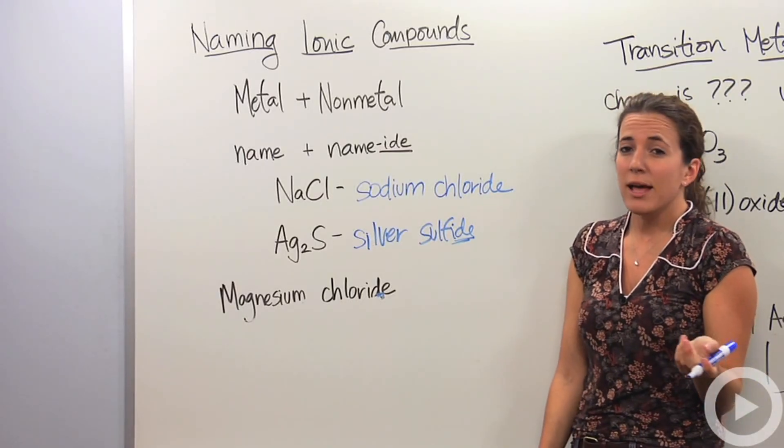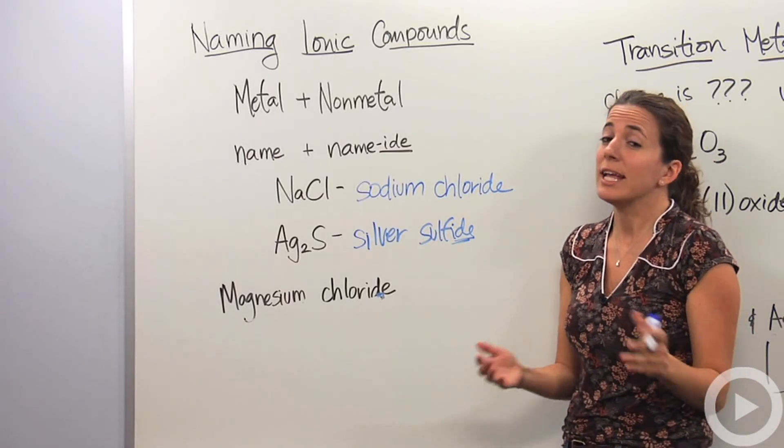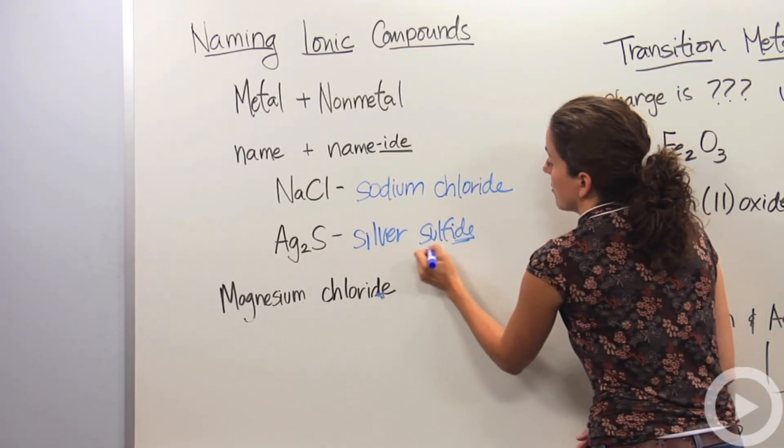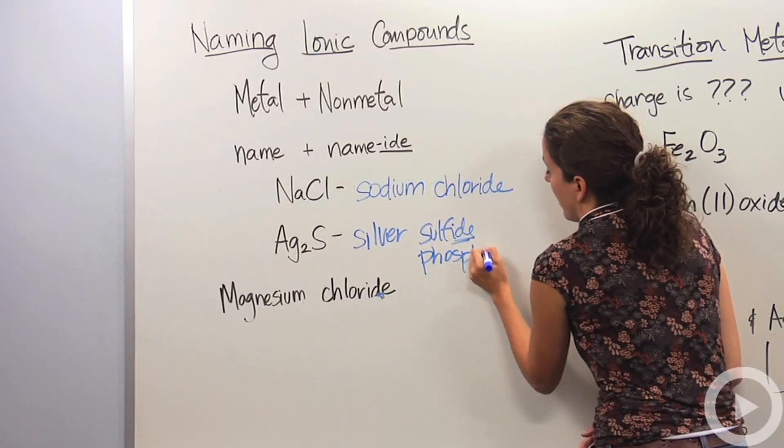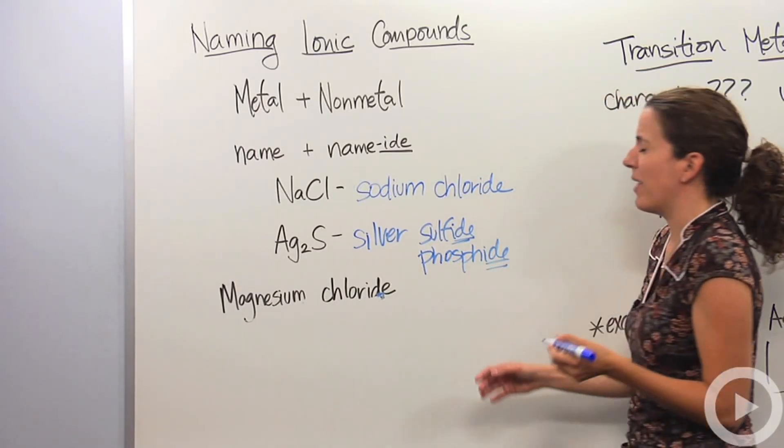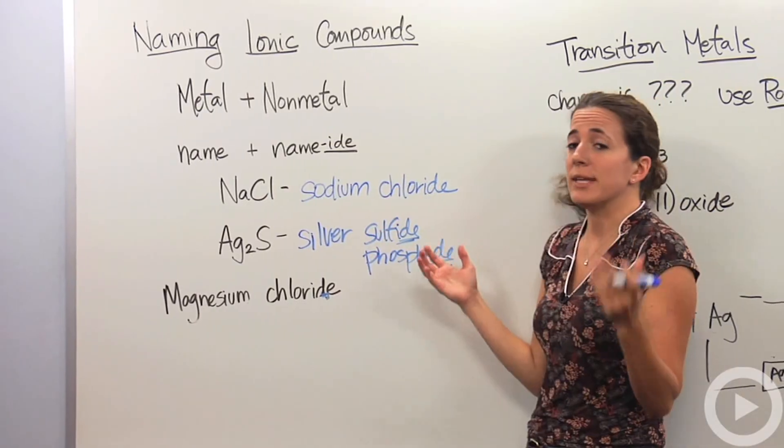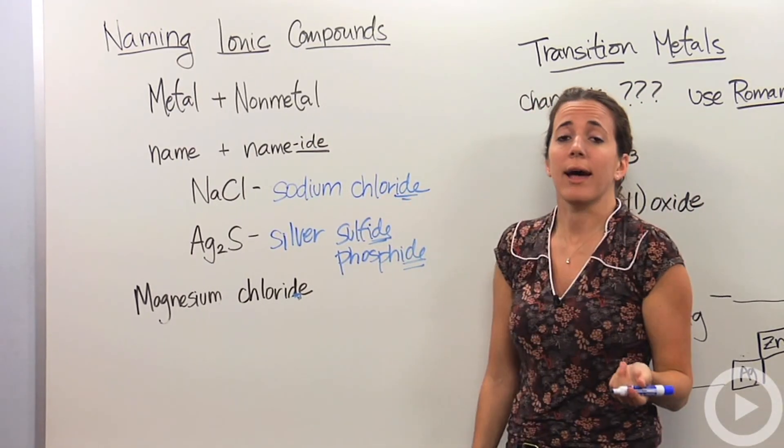Another common mistake is with phosphorus. A lot of students say phosphoride. It's just phosphide. Those are the ones that you typically get tripped up on. But otherwise it's the same thing. Just drop the last name and add -ide.